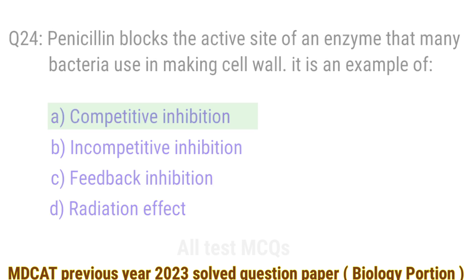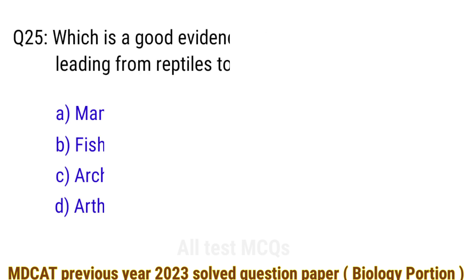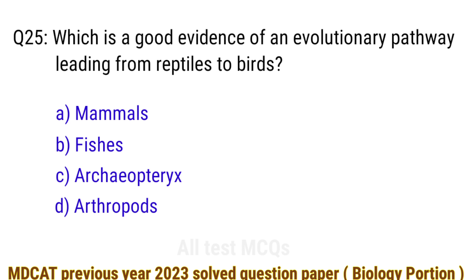Question number 25. Which is good evidence of an evolutionary pathway leading from reptiles to birds? Option C is the correct answer.